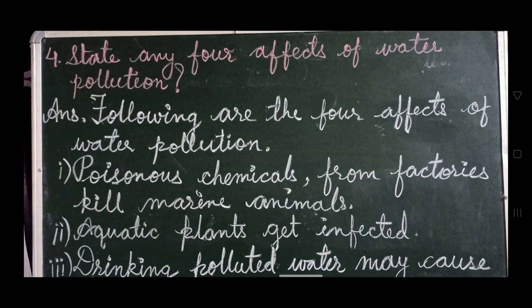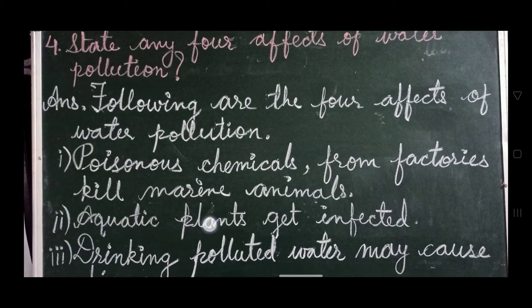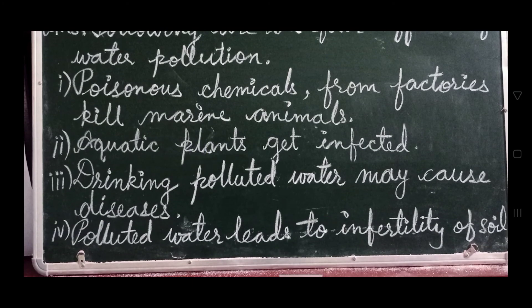Question number 4: State any 4 effects of water pollution. Answer — Following are the 4 effects of water pollution: First, poisonous chemicals from factories kill marine animals. Second, aquatic plants get infected. Third, drinking polluted water may cause diseases like jaundice and cholera. Fourth, polluted water leads to infertility of the soil — it leads to a decrease in the fertility of the soil.